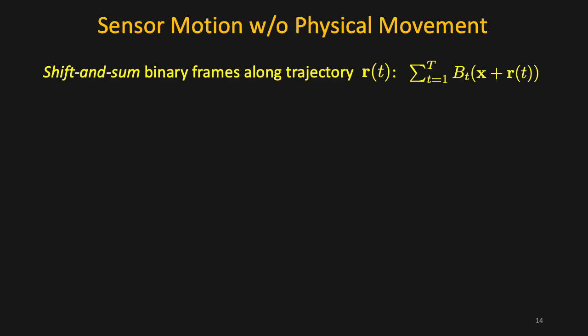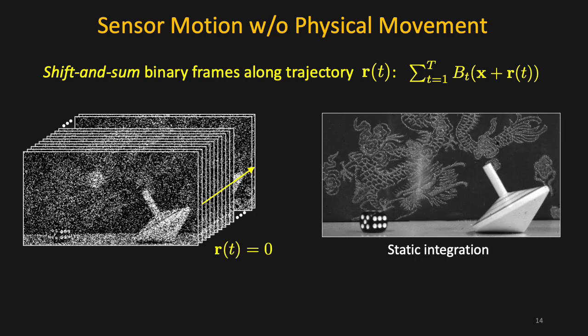We now consider projections that are computed along arbitrary spatio-temporal directions, such as the sum of shifted bit planes. When there is no shift, such a sum produces a conventional intensity image. Static objects appear sharp, but moving objects are blurred.